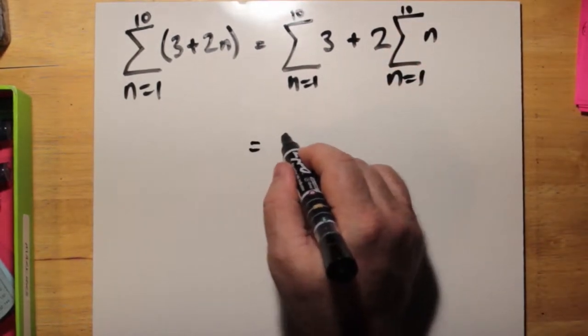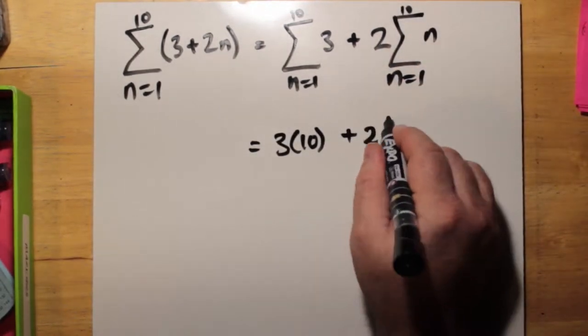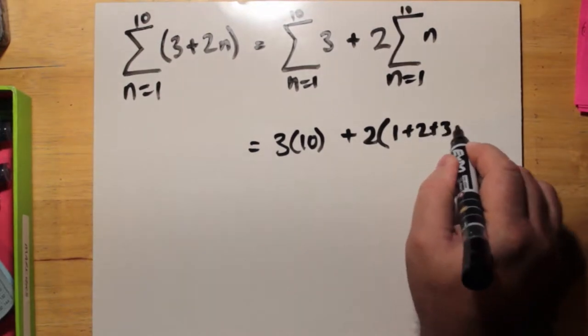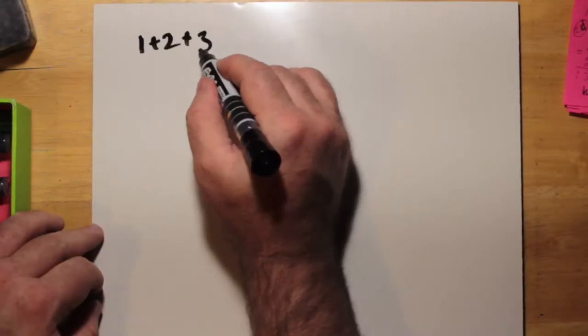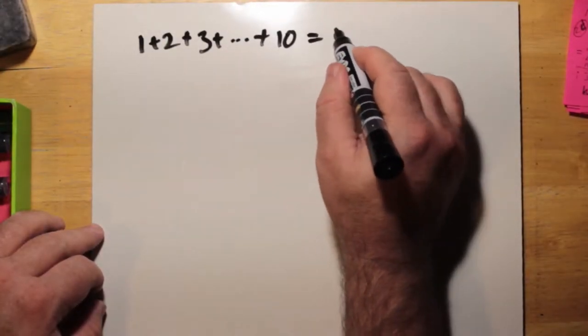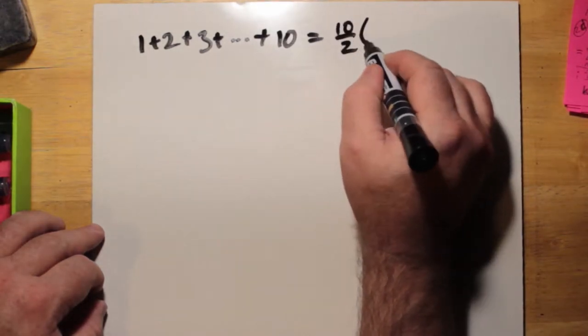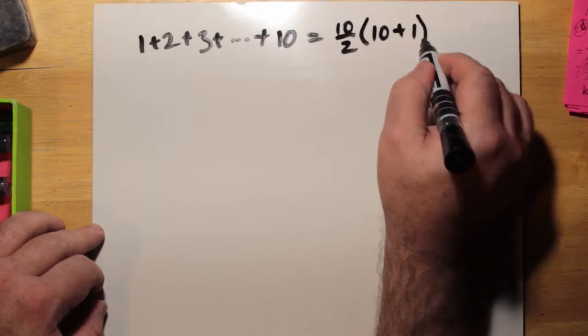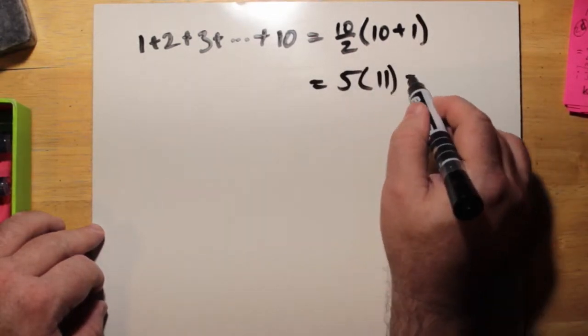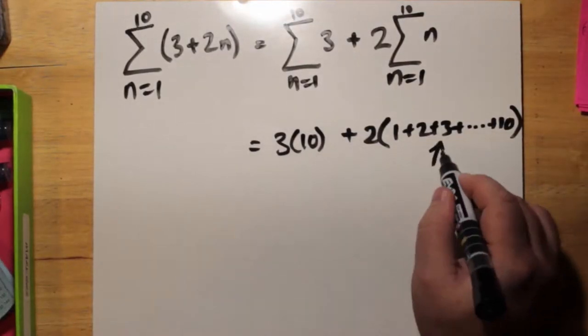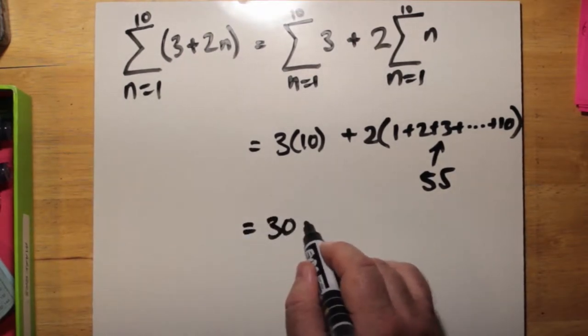We can take the 2 out. And notice we actually find that we have to reckon with 1 plus 2 plus 3 plus 4 all the way up to 10. There's a simplification formula where you can add the first and the last terms and multiply by half of the number of terms. And you get 55 from that. Of course, you can check this by simply adding the 10 numbers together. Once we do all the math, we get 140.